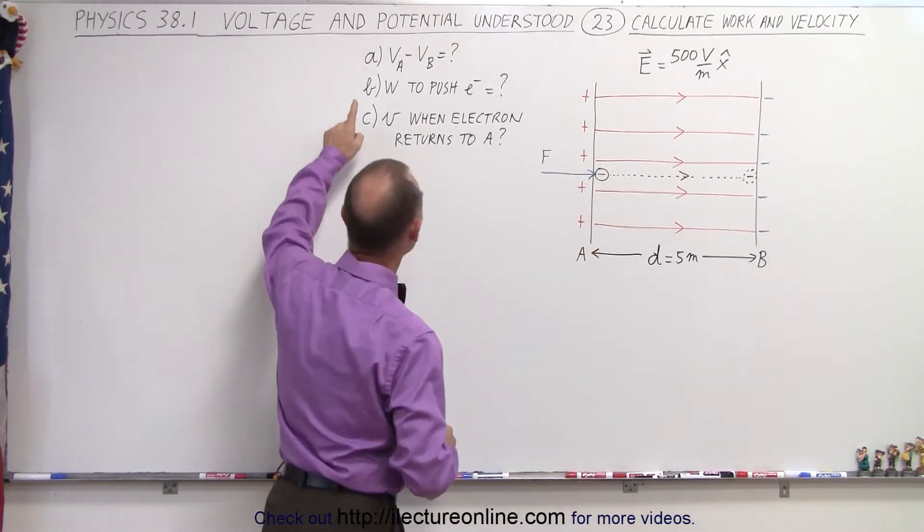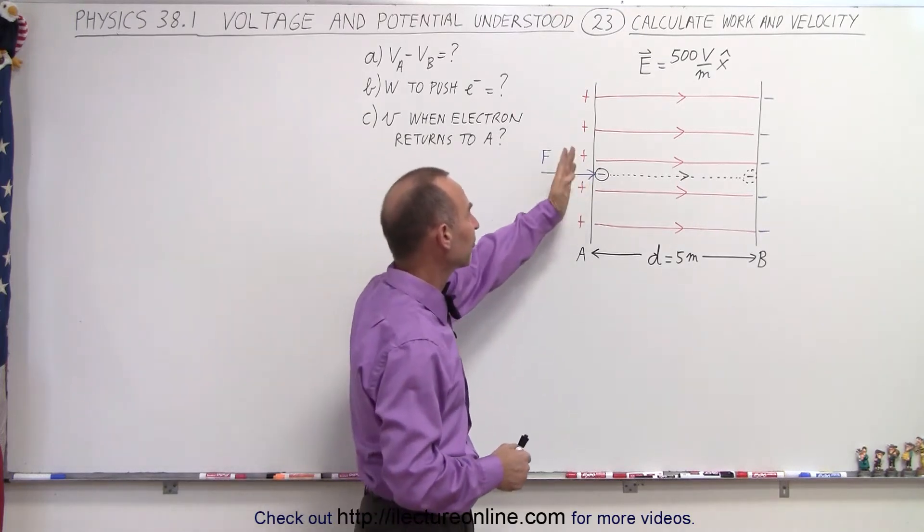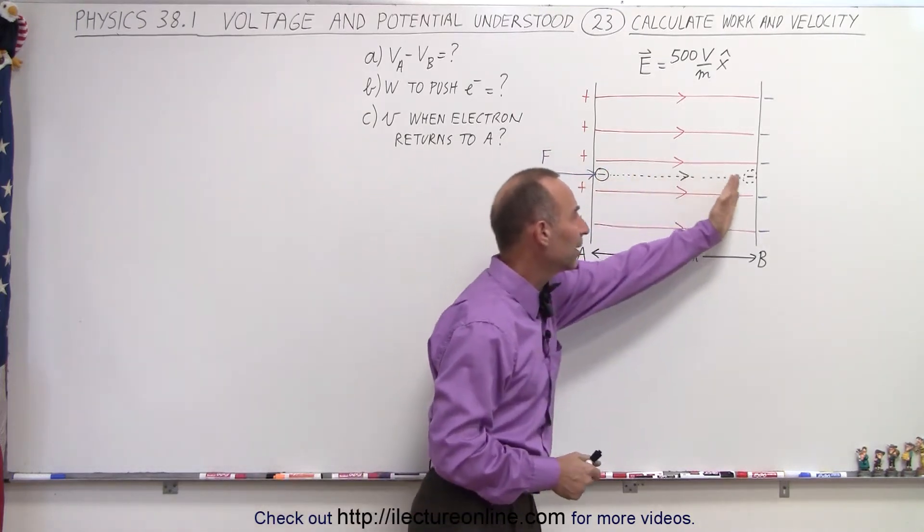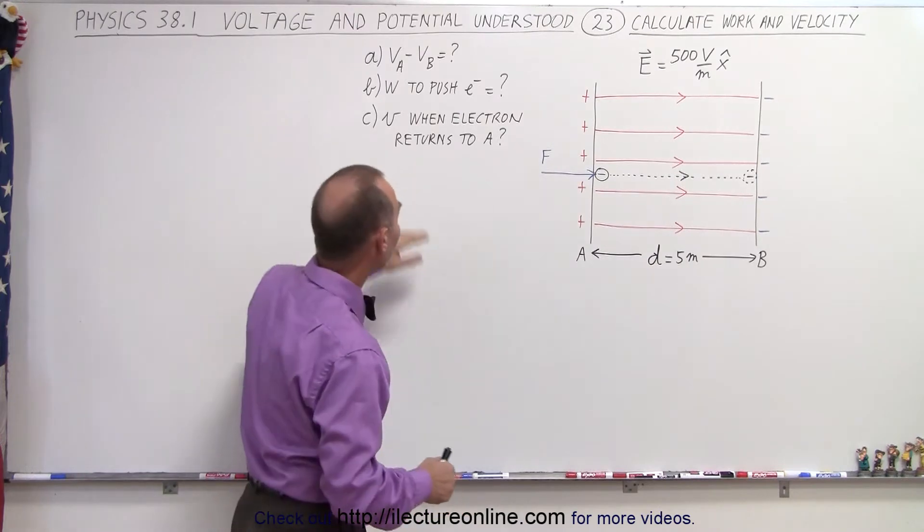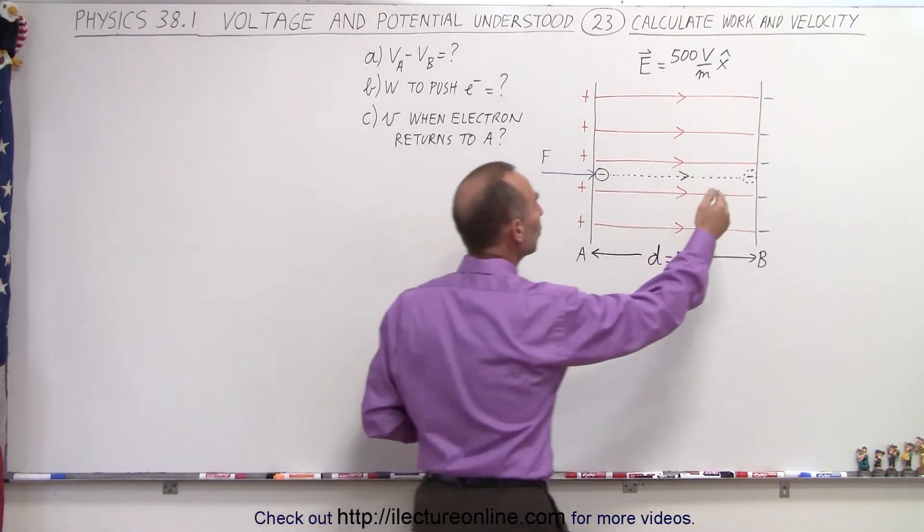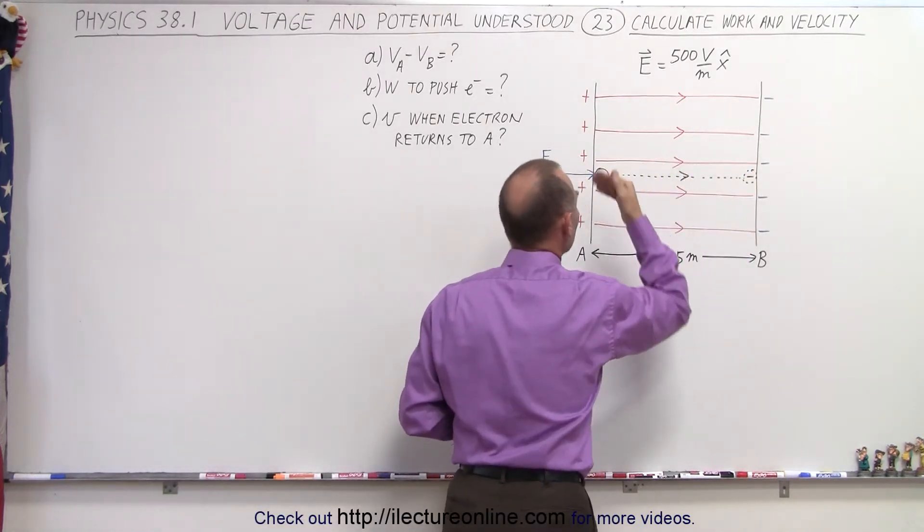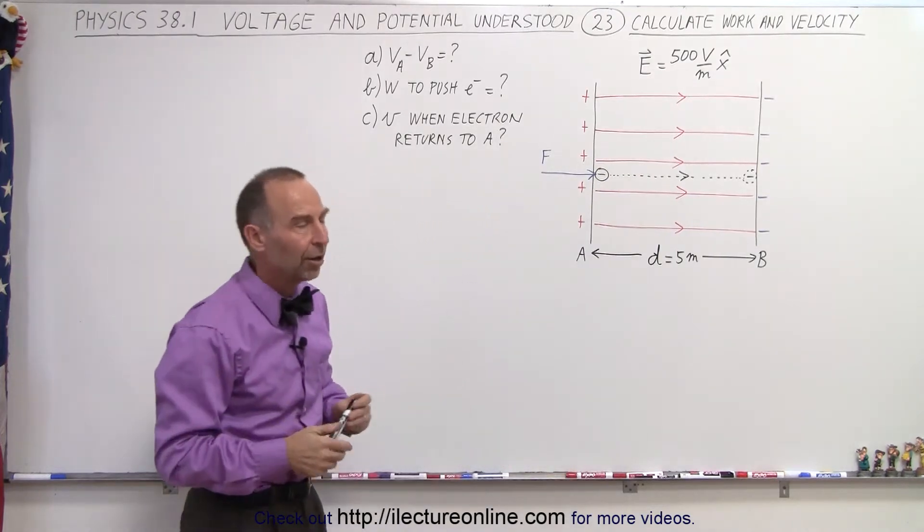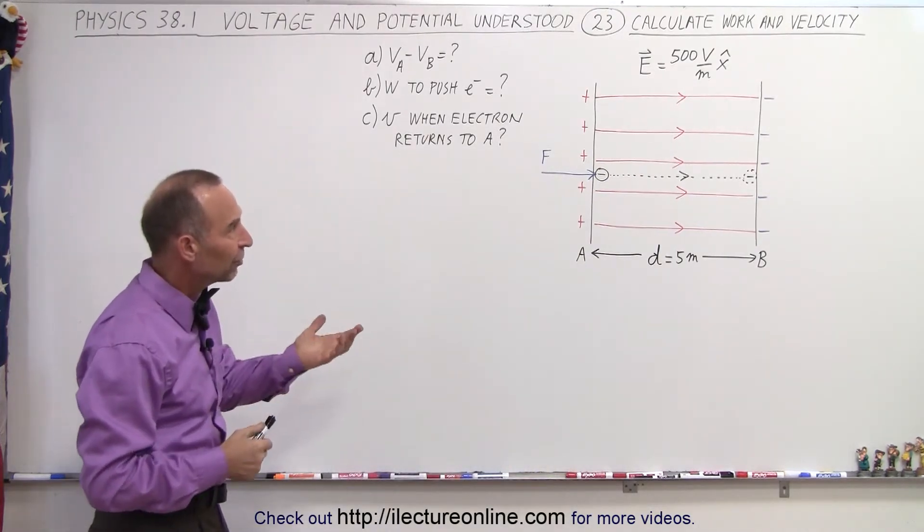Next we're going to find out how much work it will take to push an electron from the positive side to the negative side. And then finally, when we let the electron go, what will be its velocity when it returns back to the positive side of that electric field.